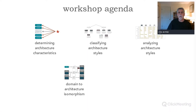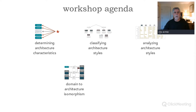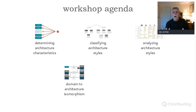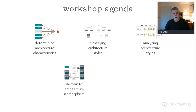After that, we're going to look at another decision criteria — irrespective of our drivers and irrespective of an exact architecture match — something called domain-to-architecture isomorphism. In other words, does the shape of the architecture match the shape of the problem that you're trying to solve? We'll go through quite a few scenarios to figure out what this domain-to-architecture isomorphism is.